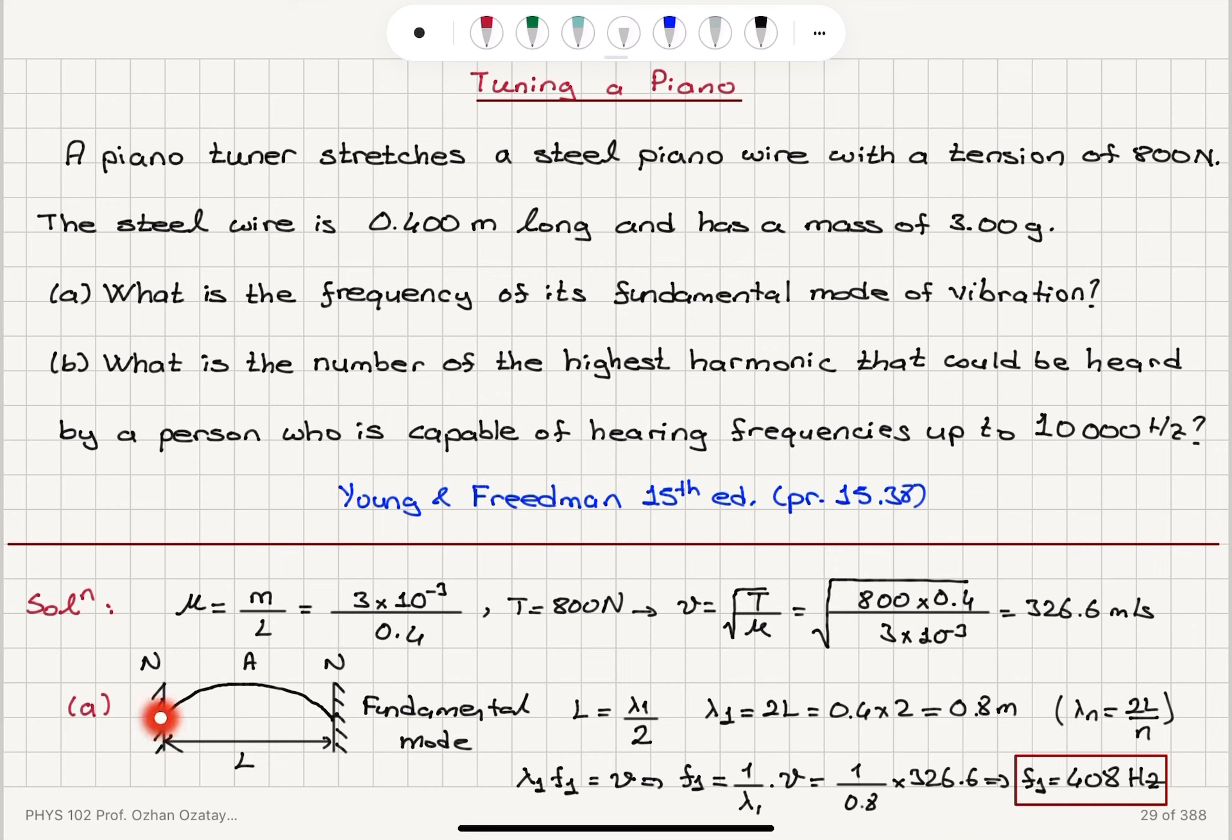Square root of tension divided by mass per unit length is the propagation speed. The fundamental mode with two fixed ends is node anti-node node, which is lambda over 2 equals the length of the wire. So the corresponding wavelength is 0.8 meters. Lambda times frequency is the propagation speed. So the frequency is propagation speed divided by the wavelength, which is 408 hertz.